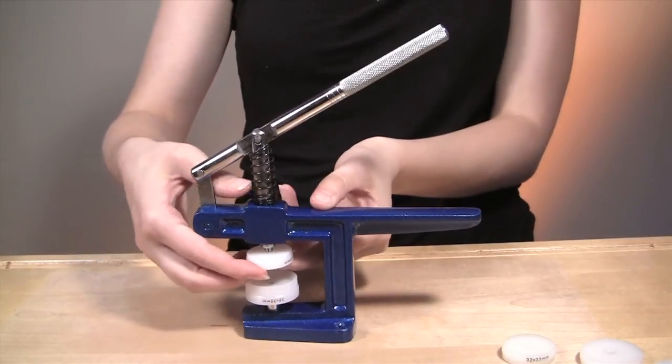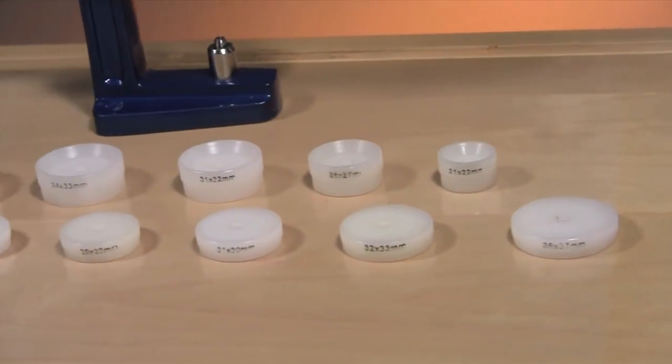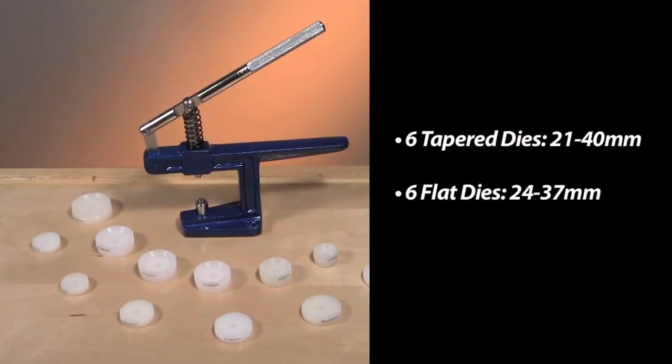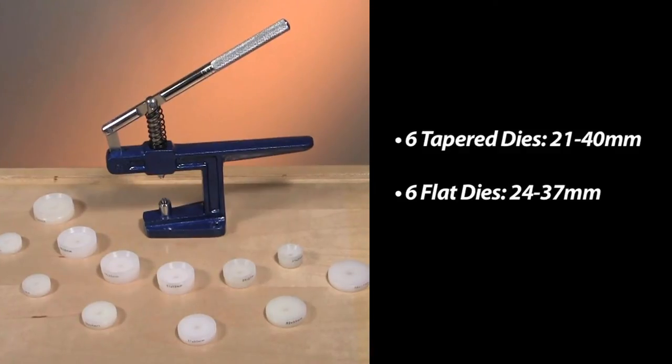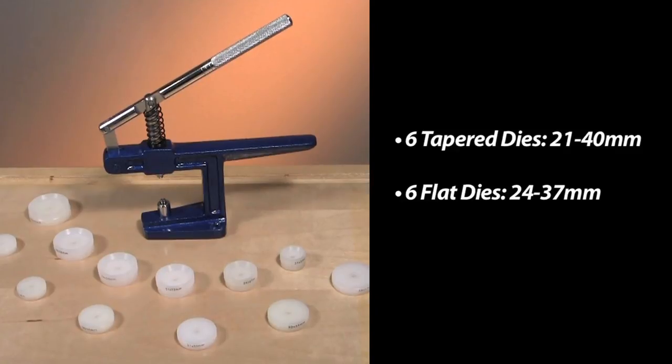The nylon dies are interchangeable and designed to protect the watch surface. The reversible dies come in a range of sizes and styles. Six tapered dies ranging in sizes from 21 to 40 millimeters. Six flat dies ranging in size from 24 to 37 millimeters.